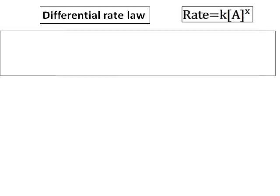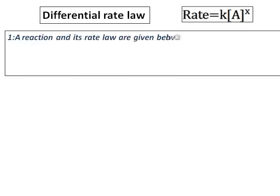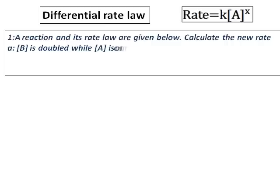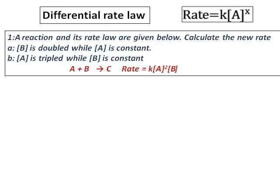Let's do our first question on differential rate law. A reaction and its rate law are given. Calculate the new rate when: (a) the concentration of B is doubled while the concentration of A is constant, and (b) the concentration of A is tripled while concentration of B is constant. The rate law is: rate = k[A]²[B], meaning the reaction is order 2 with respect to A and order 1 with respect to B.